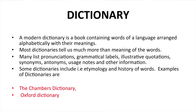Let us start with the dictionary. A modern dictionary is a book containing words of a language arranged alphabetically with their meanings. Most dictionaries tell us much more than the meaning of words. Many list pronunciation, grammatical labels, illustrative quotations, synonyms, antonyms, usage notes, and other information. Some dictionaries include etymology and history of the words.